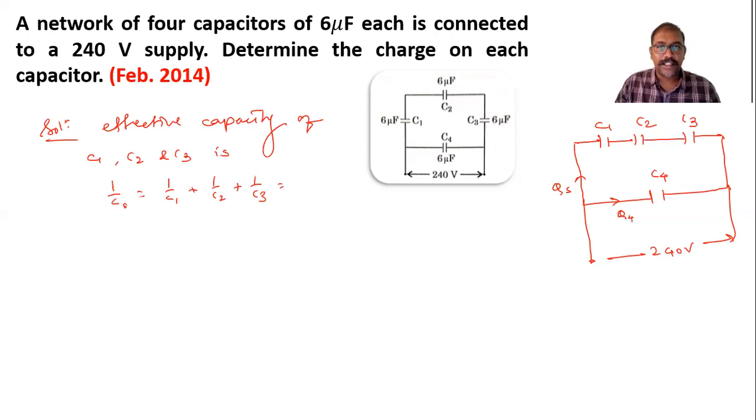It is 1/6 + 1/6 + 1/6 since each capacitor is 6 microfarads. So it is 3/6, which means 1/2. So 1/Cs = 1/2. The capacity in series for this combination is 2 microfarads.